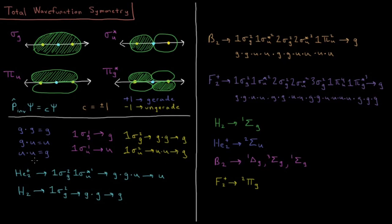What we need to do is look at what happens when we multiply two functions together with respect to inversion symmetry — much like even and odd functions. g times g equals g (symmetric times symmetric equals symmetric). g times u equals u (symmetric times anti-symmetric equals anti-symmetric). And u times u equals g (anti-symmetric times anti-symmetric equals symmetric). For every electron in our molecule, we identify whether it is g or u and multiply together all the g and u states to find the net result.